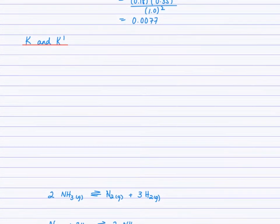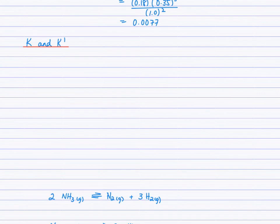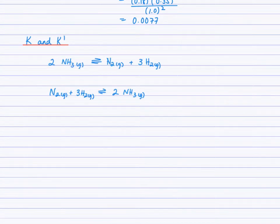Moving on, looking at K and K prime. You'll notice that these two equations are reciprocals or reverse of each other. So in one case, the ammonia decomposing is the forward reaction. And in the second case, it's the synthesis of ammonia that is the forward reaction. So they're exactly reverse equations of one another. If you're to write, I'm asking you now to go and write an expression for K for each equation.